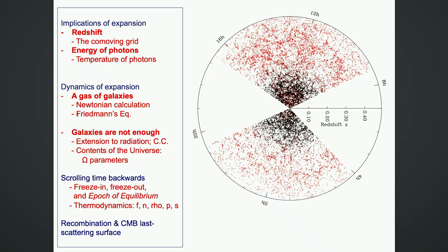If isotropy is not just a property of our special point but is a property of other locations and times — meaning we are not special — then homogeneity is guaranteed. Isotropy is strong. I want to start discussing the dynamics of the evolution of the scale factor by considering, given this snapshot of the gas of galaxies, the information in this snapshot.